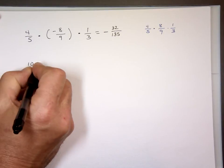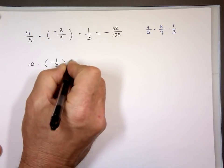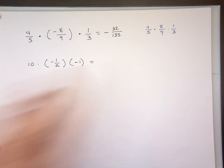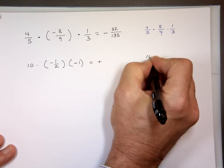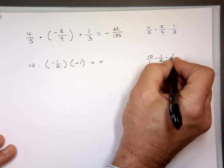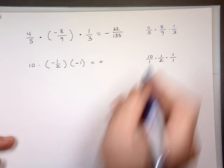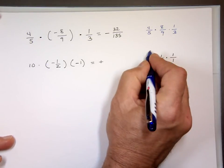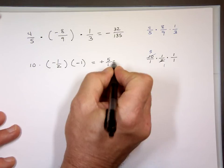Ten times negative one half times negative one. How many negative numbers do you see? Two — that's even, so the answer is going to be positive. Ten over one times one over two times one over one. I already know my answer is positive. Ten divided by two is five, leaving five times one times one is five over one, which is five.